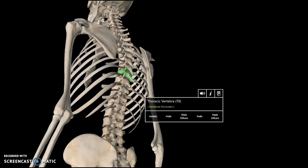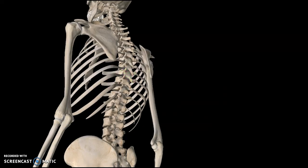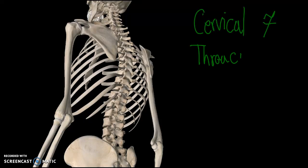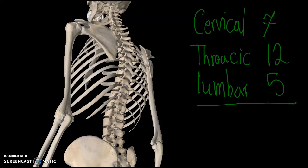Hi guys, this is a video tutorial for the vertebral column. The vertebral column is made up of three different parts: the cervical, which has seven vertebrae; the thoracic, which has 12; and the lumbar, which has five. Together they make up 24 vertebral bones.